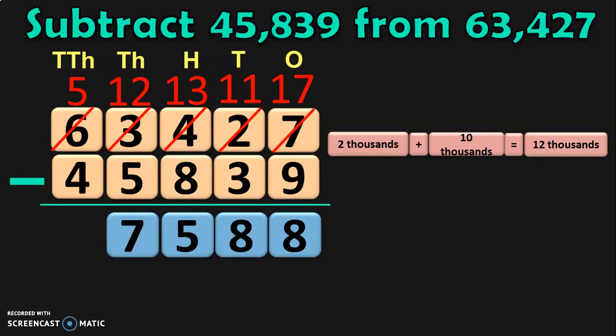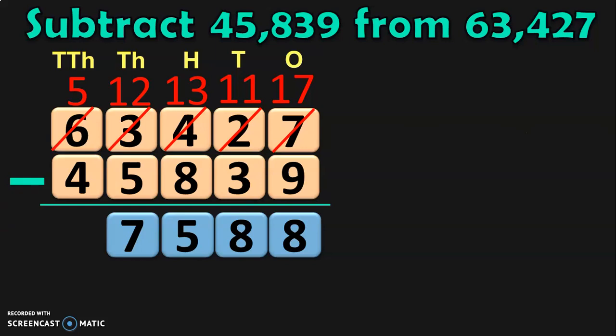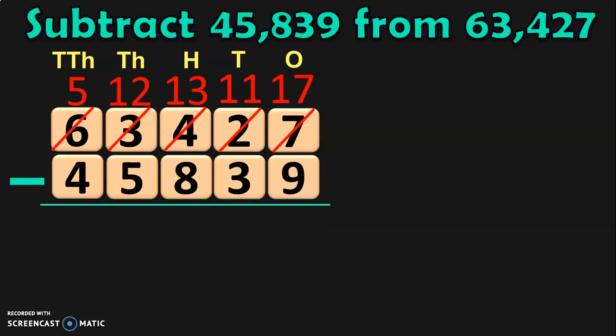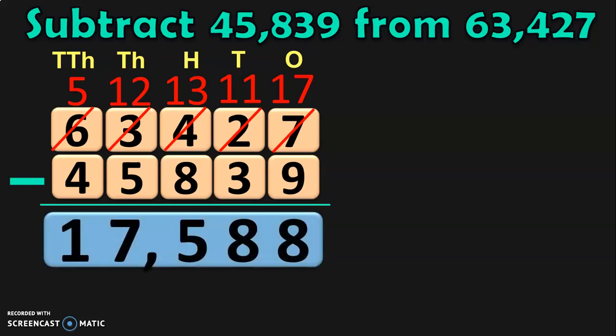Next, finally, you are going to subtract the digits in the ten thousands place. 5 minus 4 will give you 1. So, when you subtract 45,839 from 63,427, you will get the difference to be 17,588.